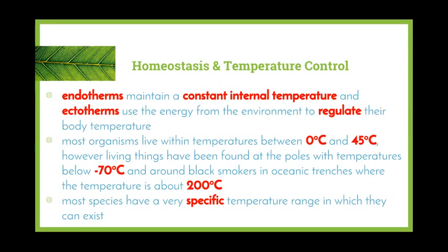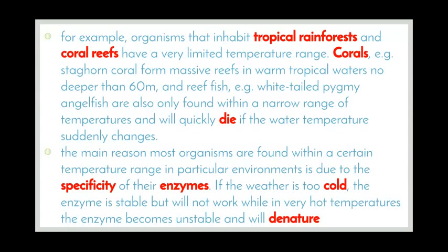Most organisms live within temperatures between 0 and 45 degrees Celsius. However, living things have been found at the poles with temperatures below minus 70 degrees and around black smokers in oceanic trenches where the temperature is about 200 degrees Celsius. Most species have a very specific temperature range in which they can exist. For example, organisms that inhabit tropical rainforests and coral reefs have a very limited temperature range.